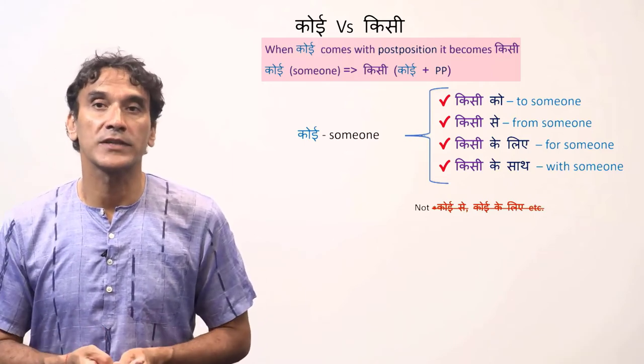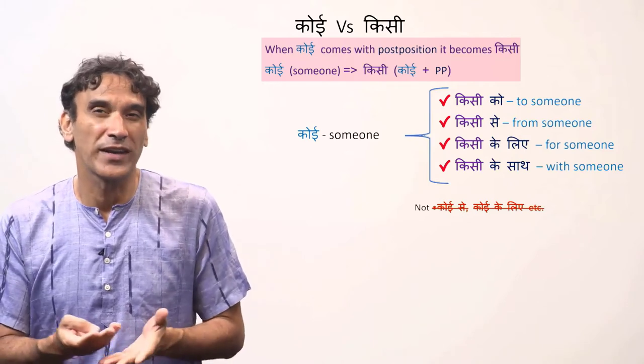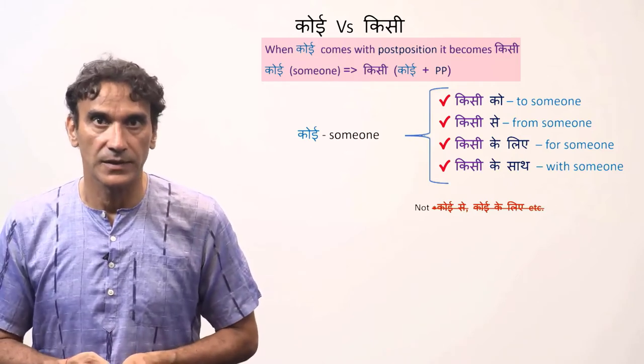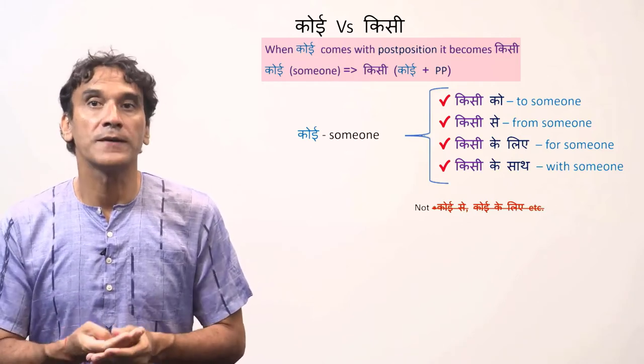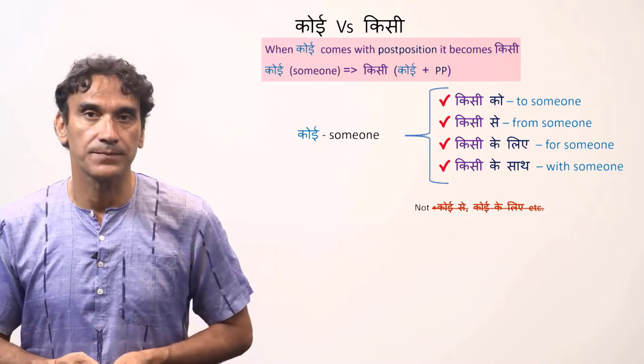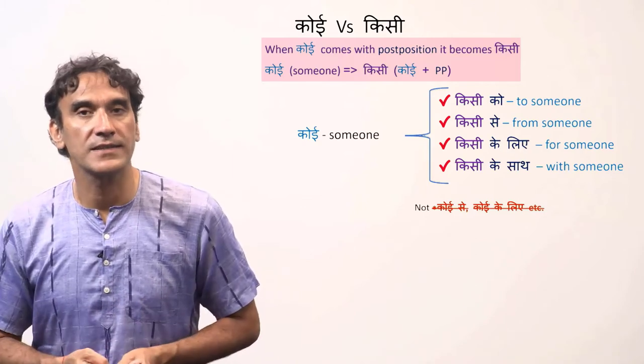It is incorrect to say koi ko, koi se, koi ke liye, koi ke saath, etc. When koi comes with a postposition, it becomes kisi. Let's take some example sentences.